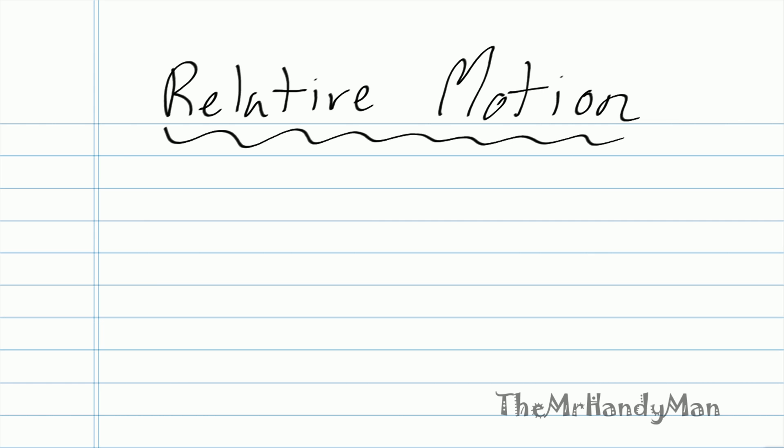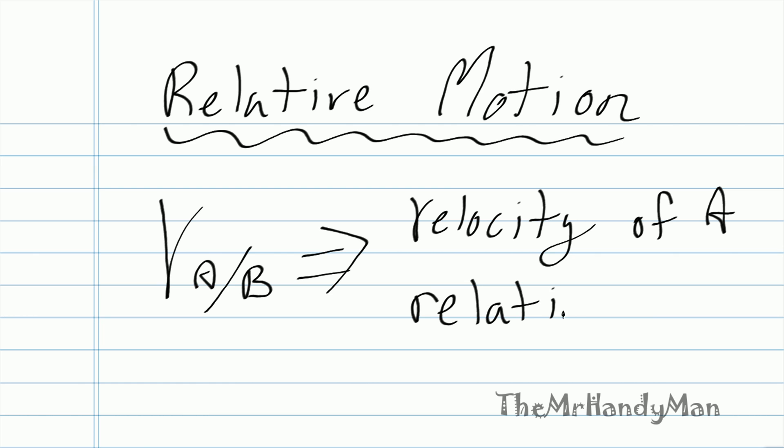And really, for relative motion, there's not much difference here, but one exception would be if we have V A of B. What does this mean? And just so we know, this is the same thing as saying velocity of A relative to B. So that's one key thing that we just need to realize. That's what this means.